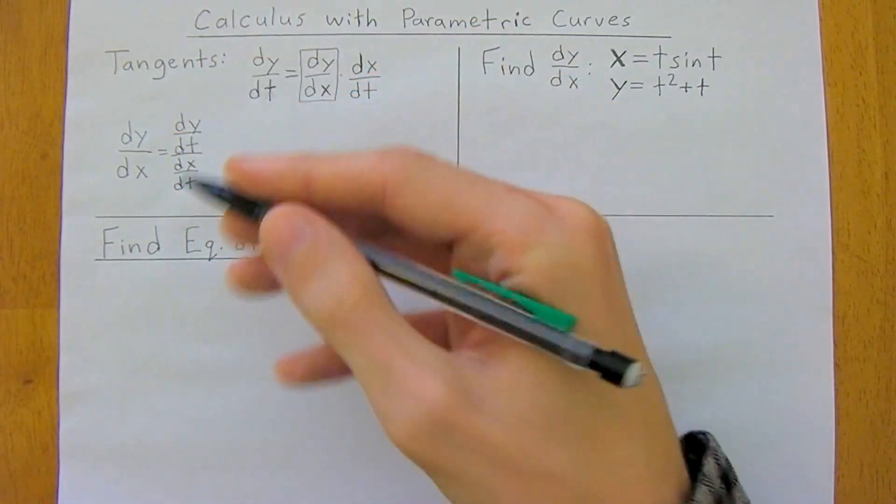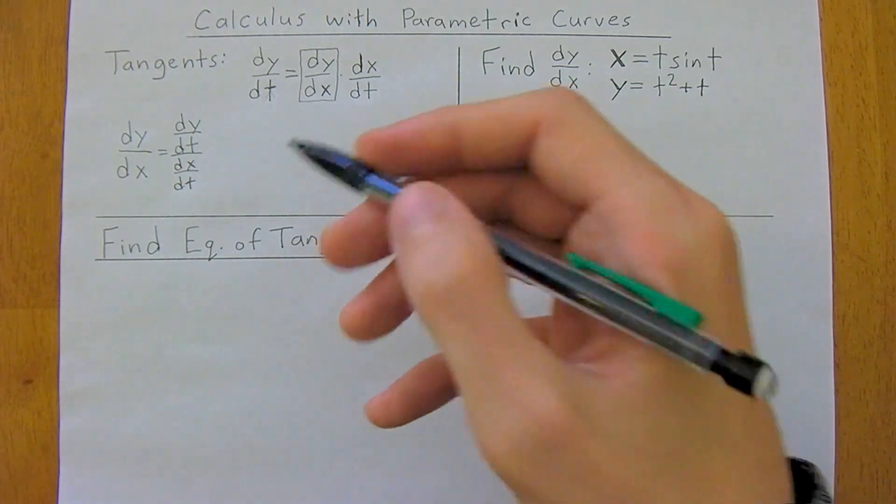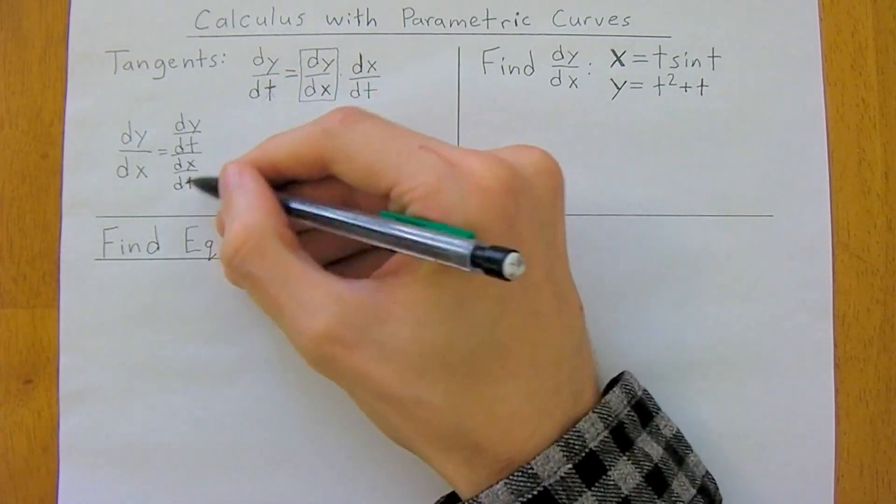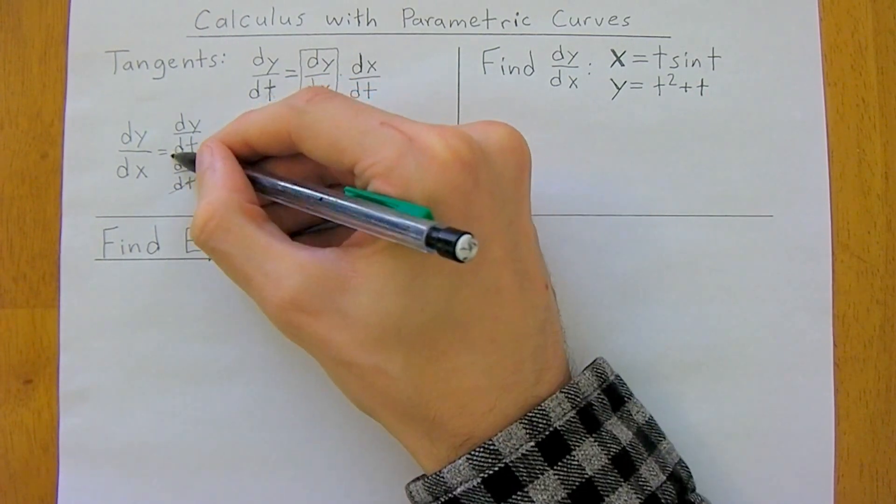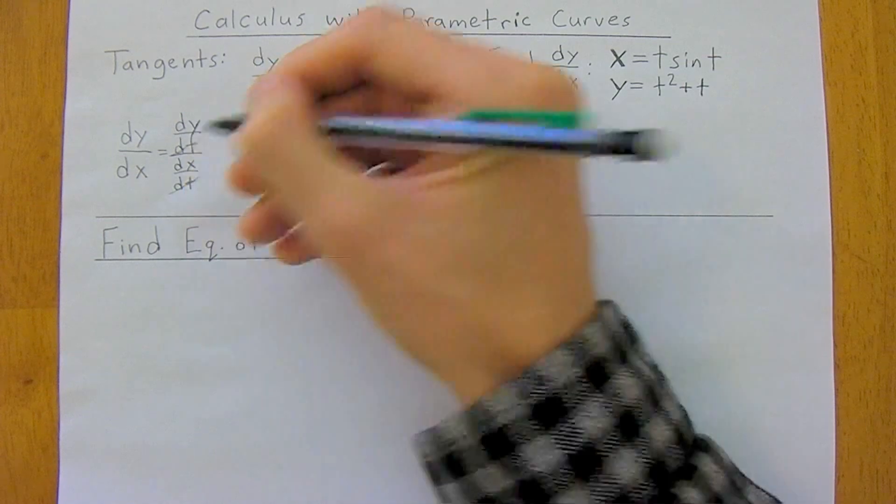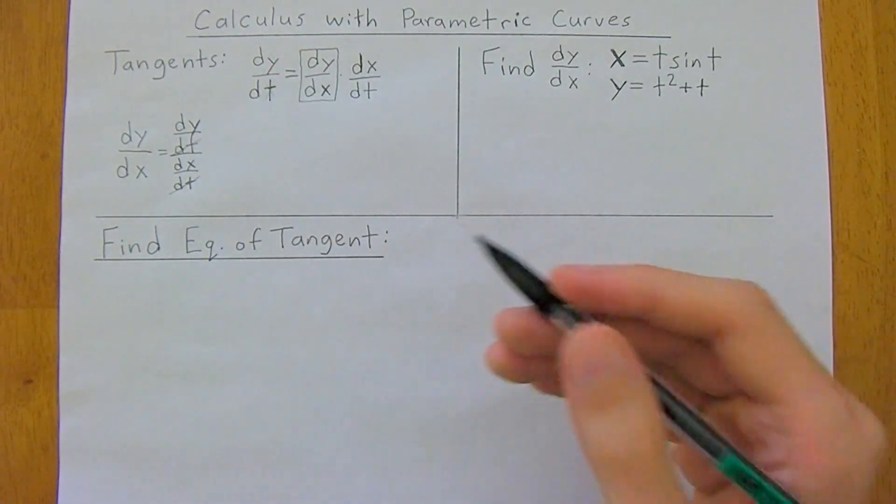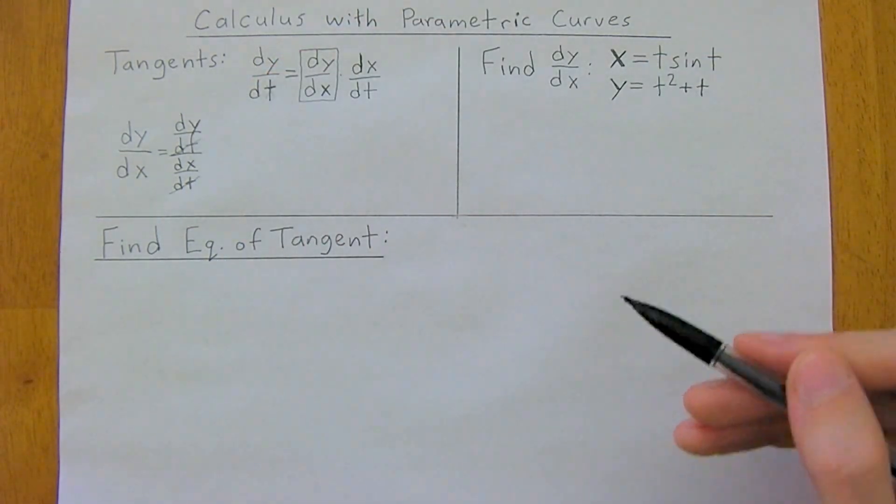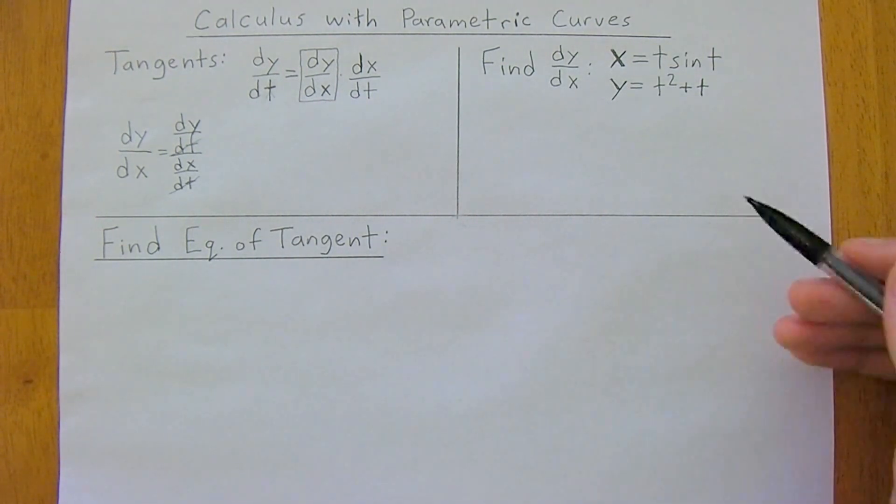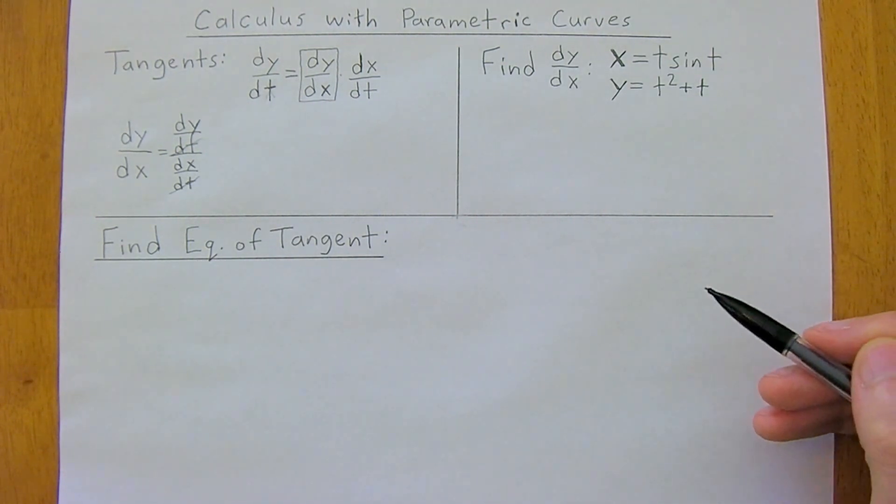And another way you could think about this is, if you wanted to get dy over dx, if you just cancel the dts on this side, you're going to be left with dy over dx. And so, now let's run through an example because it's one thing to talk about it, but it's another to actually see it done and to understand the process.